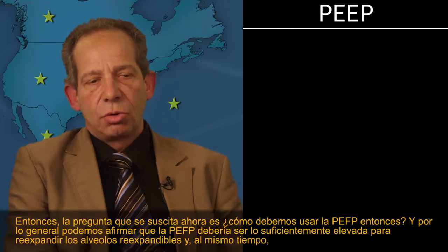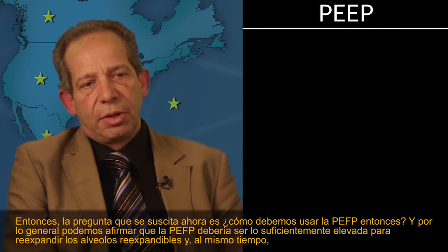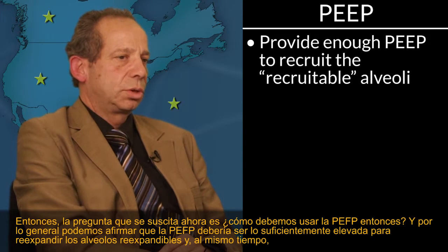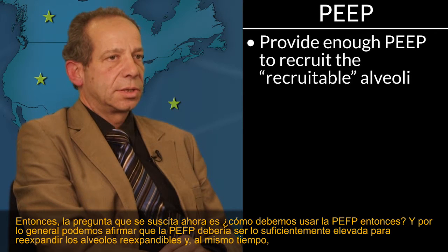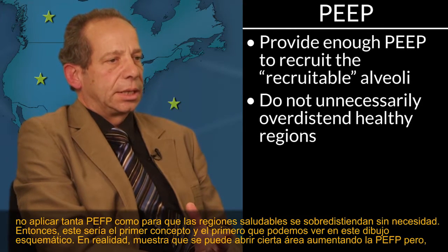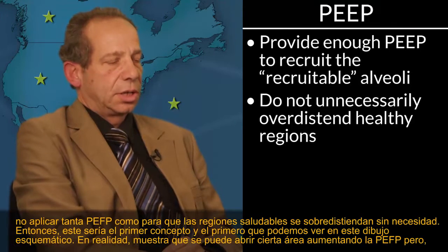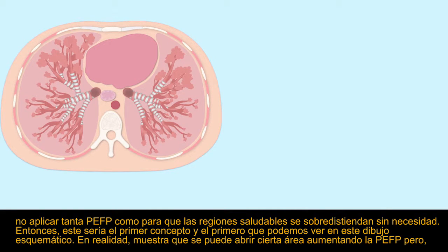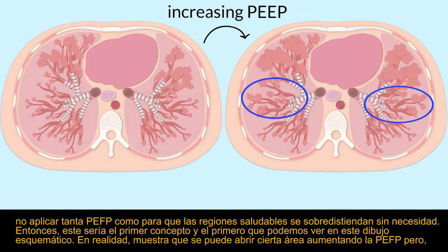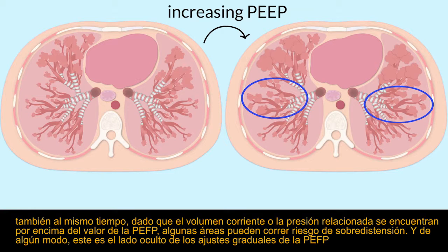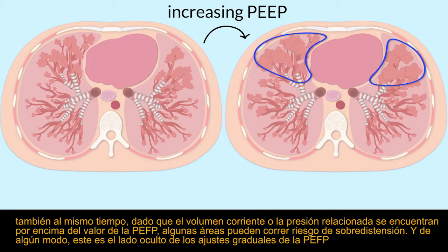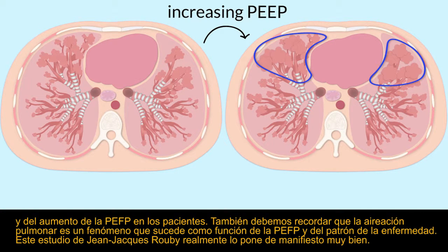So the question becomes: how should we use PEEP? Commonly, PEEP should be high enough to recruit recruitable alveoli while not applying so much PEEP that healthy regions are unnecessarily over-distended. As shown in the schematic drawing, you may open up some areas by increasing PEEP, but you also risk over-distending some areas because of the associated tidal volume or pressure above PEEP setting. This is the hidden side of PEEP titration and increasing PEEP in your patients.